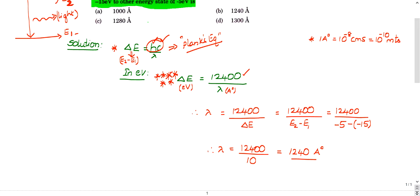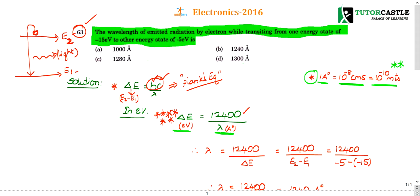Delta E is nothing but 12,400 by lambda. Make sure that you can use this formula only when the wavelength is in Angstroms and the energy should be in electron volts. If the energy is in electron volts and wavelength in Angstroms, then the relationship between energy and wavelength is nothing but change in energy equal to 12,400 by wavelength. So what is an Angstrom? You already studied in your class 9th or 10th. One Angstrom is nothing but 10 power minus 8 centimeters. This is same as 10 power minus 10 meters.